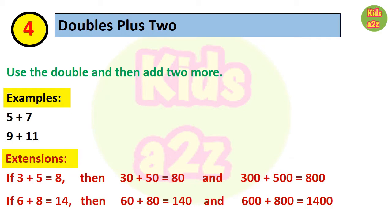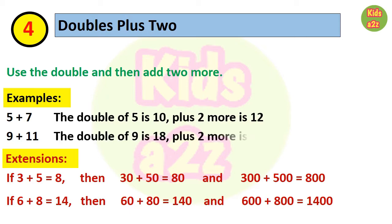This strategy is doubles plus 2. Here we need to use doubles and then add 2 more. If we want to add 5 plus 7, the double of 5 is 10, plus 2 more is 12. Similarly, for 9 plus 11, the double of 9 is 18, plus 2 more is 20. We can also apply this strategy for bigger numbers.